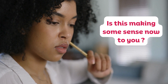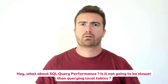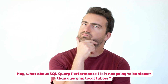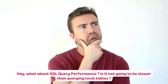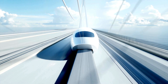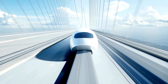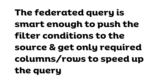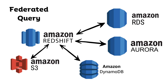But you must be thinking: what about SQL query performance? When you bring data as part of the ETL process, the data resides in local tables and the read performance is very fast. What happens when you're trying to read data from different sources at query time? The federated query is smart enough to push the filter conditions to the source and get only the required columns and rows to speed up the query. Let's take an example to understand this more clearly.